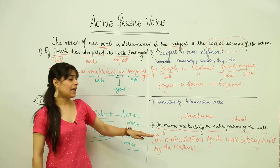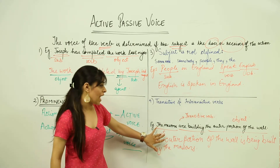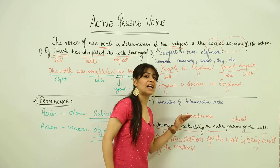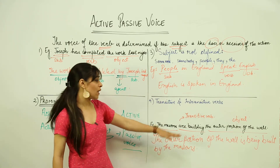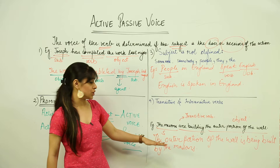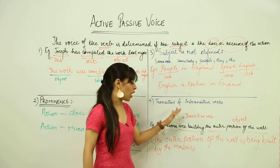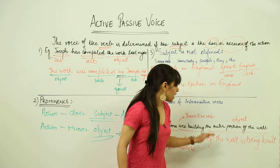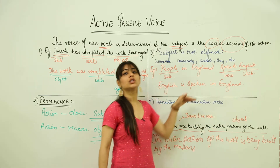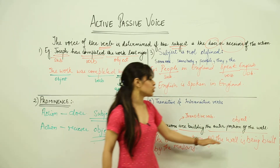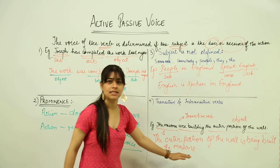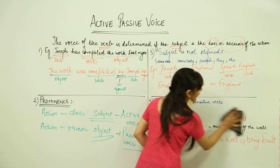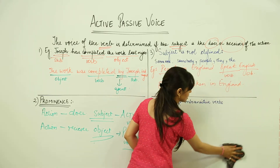It is very clearly evident that the subject and the object play a very important role in conversion from active to passive voice. It is very important to have both an object and a subject to do the conversion. This sentence has a transitive verb, with the masons as the subject and the outer portion of the wall as the object, so we could convert it into a passive voice. Now let's see an example of an intransitive verb.